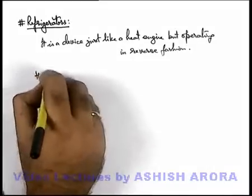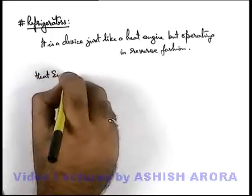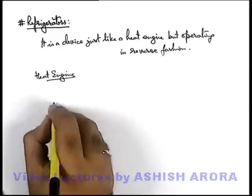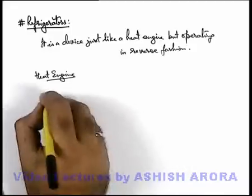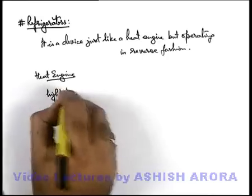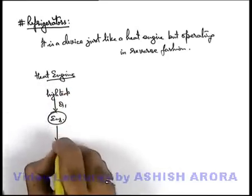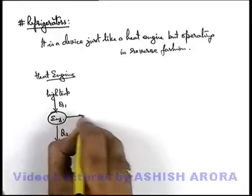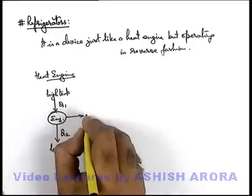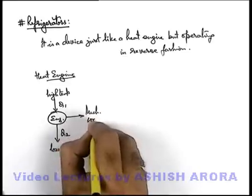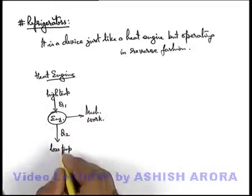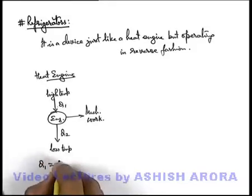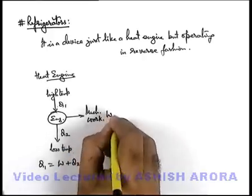When we talk about a heat engine — which we studied about in the previous article — if this is an engine, it takes heat Q1 from a high temperature region we call the source, and it rejects heat Q2 to a low temperature region which we call the sink. In the cycle it does some amount of mechanical work, which is used as the output of this heat engine. The amount of heat supplied Q1 in magnitude is equal to W plus Q2, where W is the mechanical work.